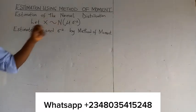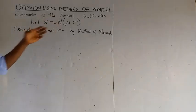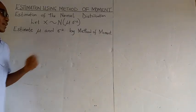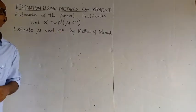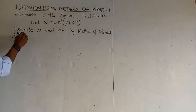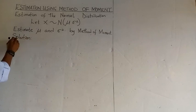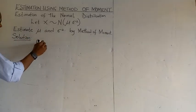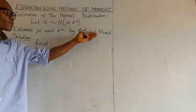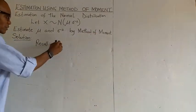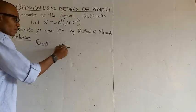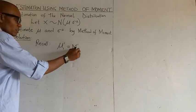Estimation of the normal distribution by method of moments. This time we have to estimate mu and the variance. You can recall that by method of moments, to estimate, we write the population mean to be equal to the sample mean.